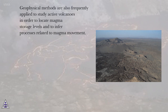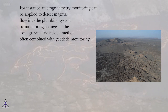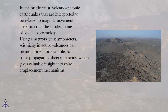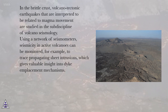Geophysical methods are also frequently applied to study active volcanoes in order to locate magma storage levels and to infer processes related to magma movement. For instance, microgravimetry monitoring can be applied to detect magma flow into the plumbing system by monitoring changes in the local gravimetric field, a method often combined with geodetic monitoring. In the brittle crust, volcano-tectonic earthquakes interpreted to be related to magma movement are studied in the subdiscipline of volcano seismology. Using a network of seismometers, seismicity in active volcanoes can be monitored to trace propagating sheet intrusions, which gives valuable insight into dike emplacement mechanisms.